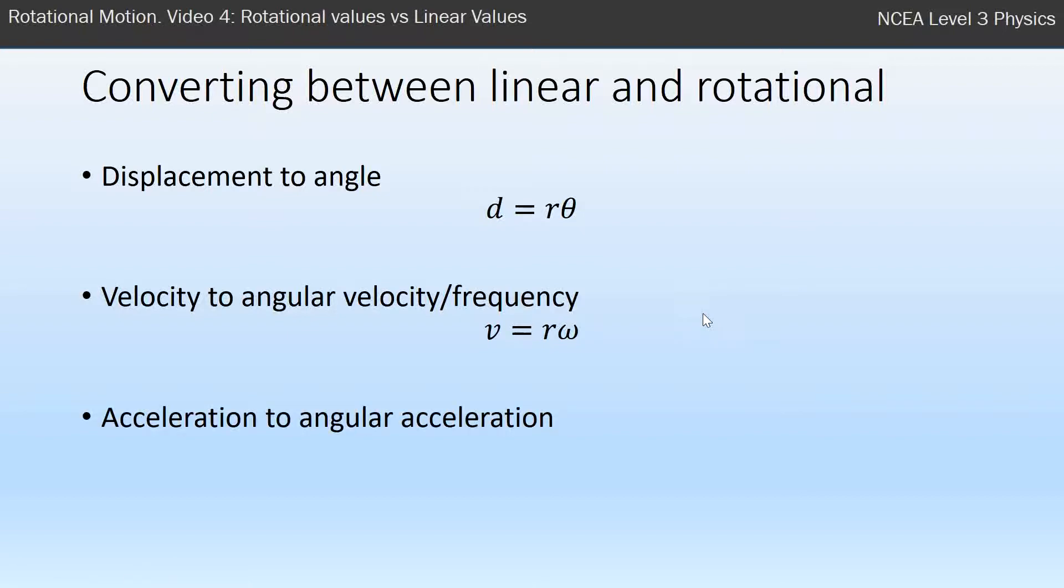Finally, if we have the angular acceleration we can turn it to acceleration. Angular acceleration has the symbol alpha. It looks like an A but it's the Greek letter alpha. And we just times by radius to give acceleration. Now all of these three are given to us in our formula sheet.